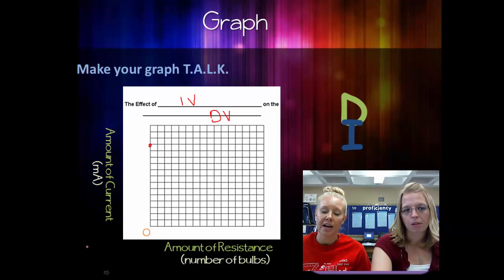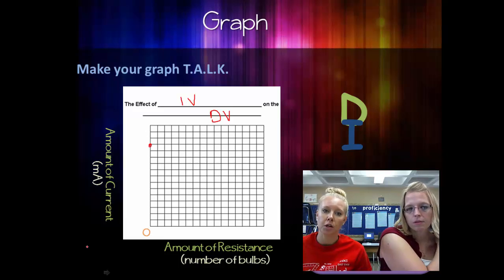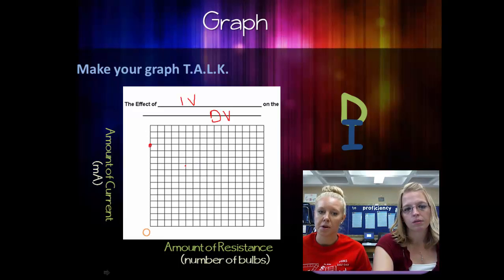And remember that because your IV is numbers - one bulb, two bulb, three bulb, four bulb - it's going to be a line graph. So you're going to have dots and you're going to connect the dots. When we do our line, when we do our graph, I'm going to go back here.